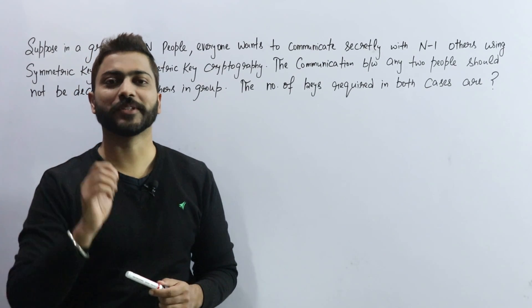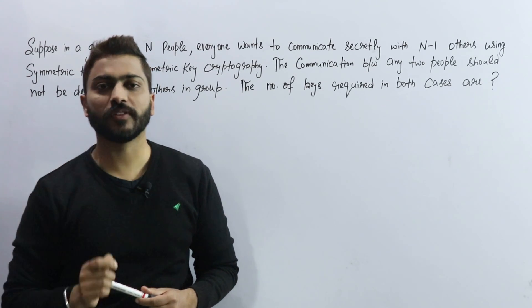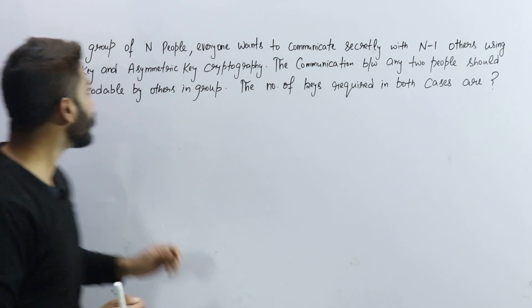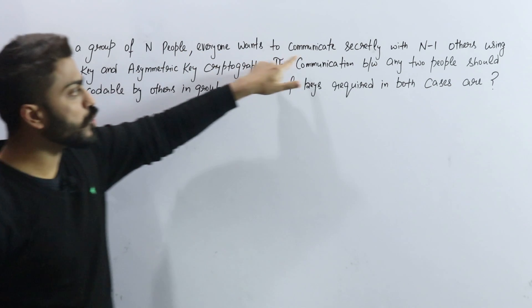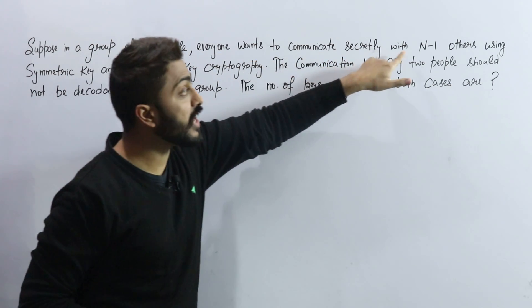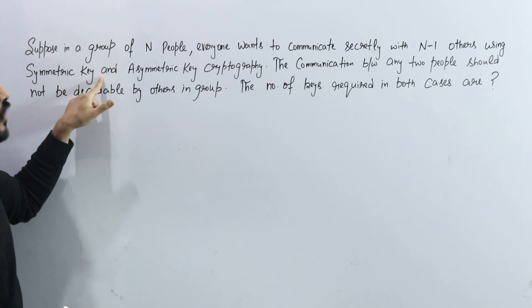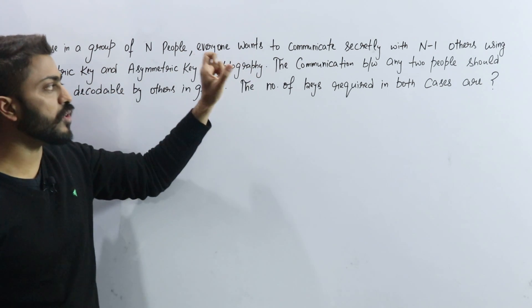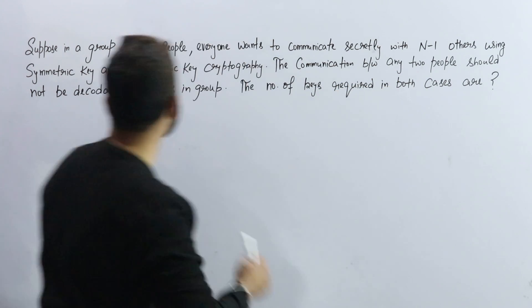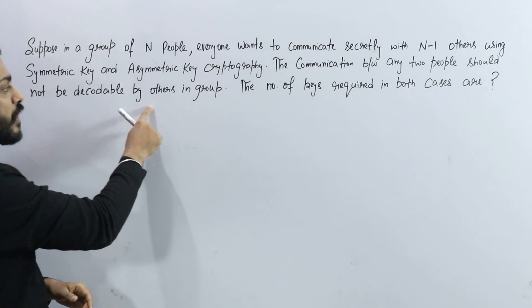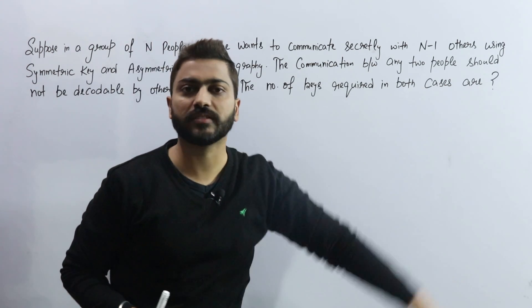Hello friends, welcome to GateSmashers. Today's question is from cryptography. Let's read the statement first. Suppose in a group of N people, everyone wants to communicate secretly with N-1 others using symmetric key cryptography and asymmetric key cryptography. The communication between any two people should not be decodable by others in the group. The number of keys required in both cases are?